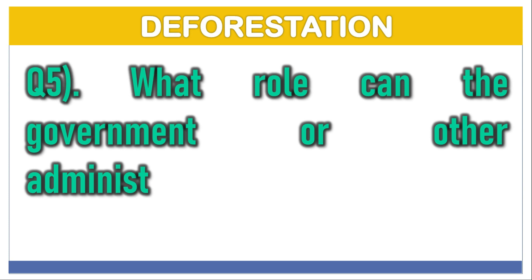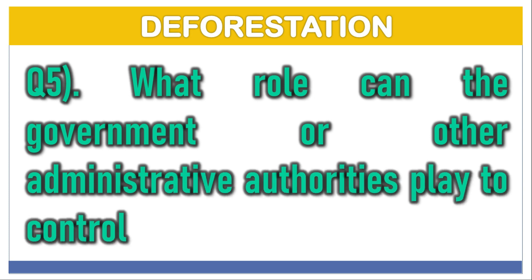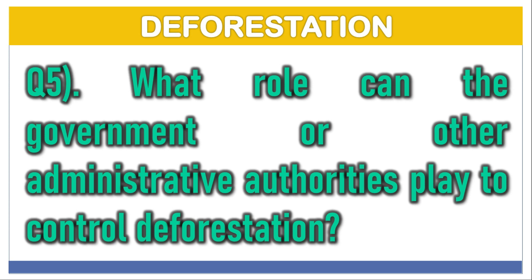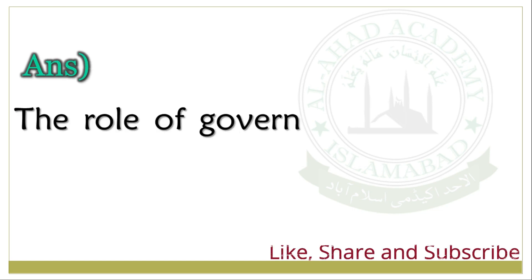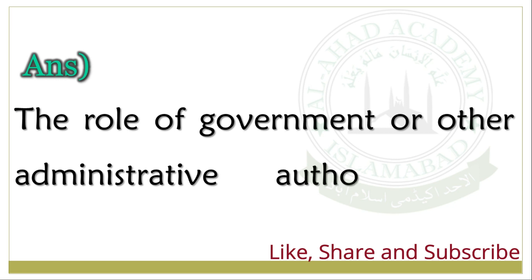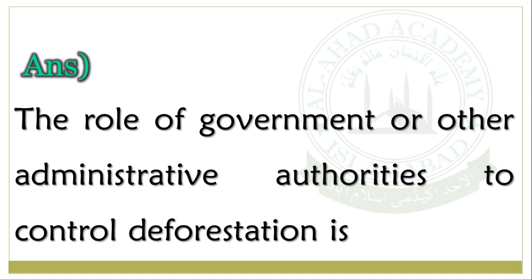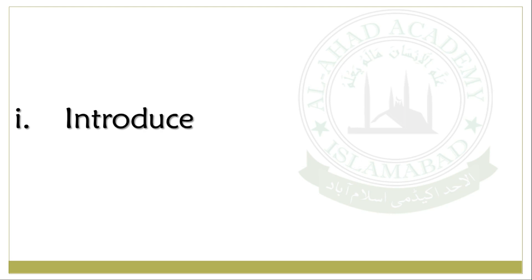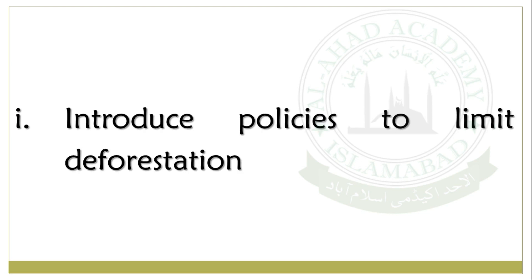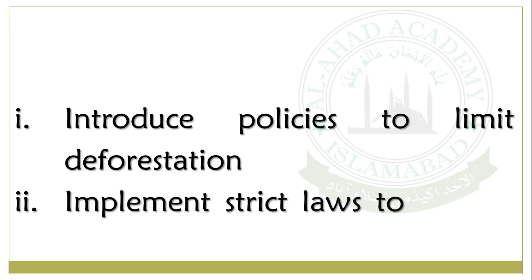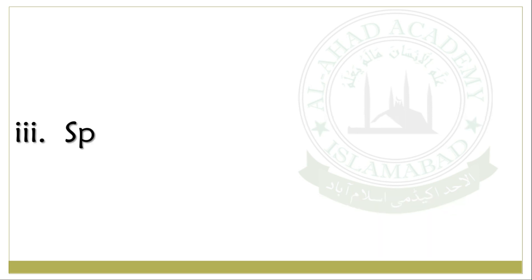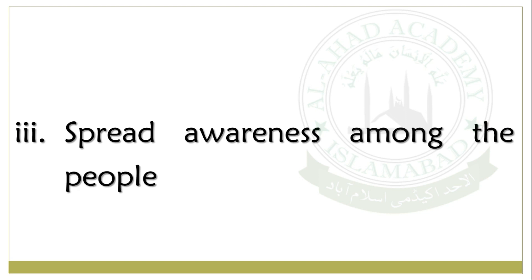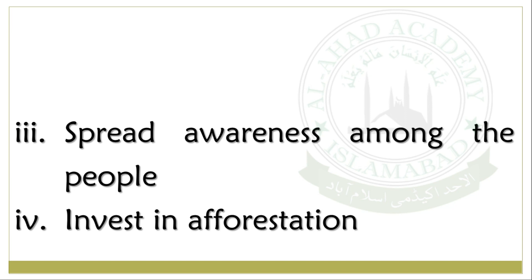Question No. 5: What role can the government or other administrative authorities play to control deforestation? Answer: The role of government or other administrative authorities to control deforestation is as follows: introduce policies to limit deforestation, implement strict laws to protect forest areas, spread awareness among the people, and invest in afforestation.